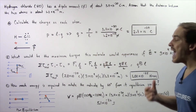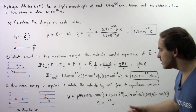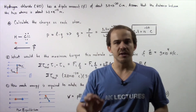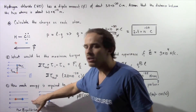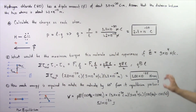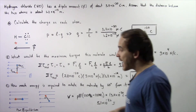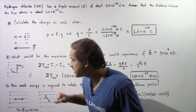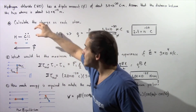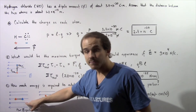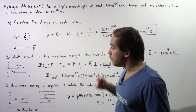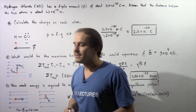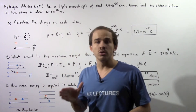Let's move on to Part C: how much energy is required to rotate the molecule by 60 degrees from its equilibrium position, with the electric field still of the same magnitude? The equilibrium position is where the molecule does not move — the H atom and chloride atom are oriented so that the electric dipole moment vector points in the same direction as the electric field, beginning on the negative side and ending on the positive side.